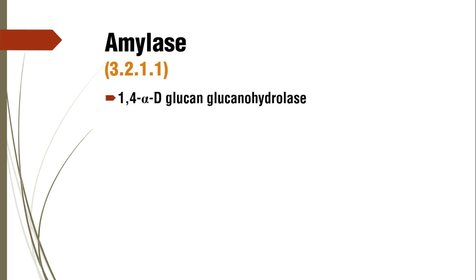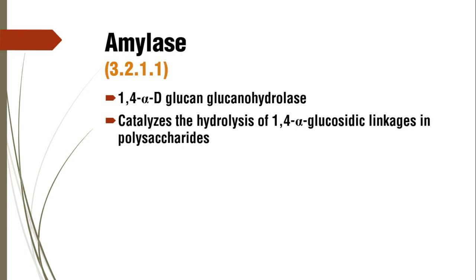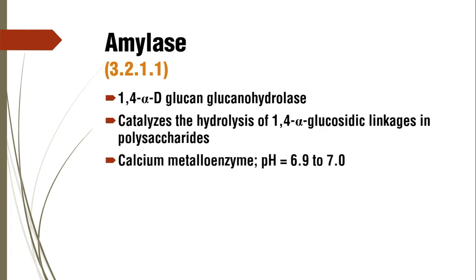We are going to move on to amylase. Its enzyme classification number is 3.2.1.1. It is a 1,4-alpha-D-glucano-glucano-hydrolase. It catalyzes the hydrolysis of 1,4-alpha-glucosidic linkages in polysaccharides and digests starch. It is a calcium metalloenzyme and its pH optima is 6.9 to 7.0.